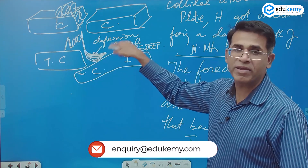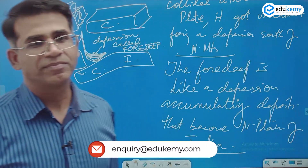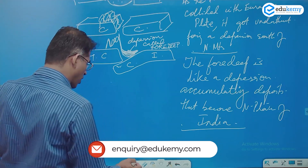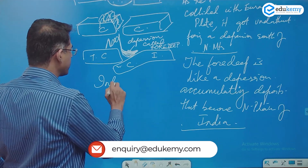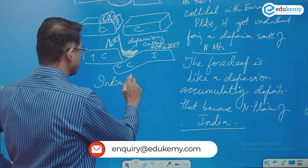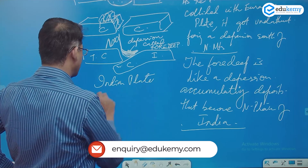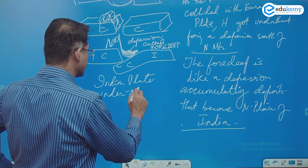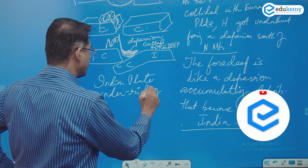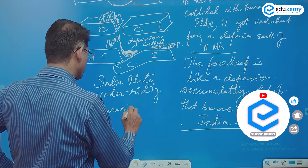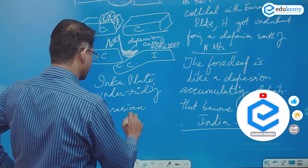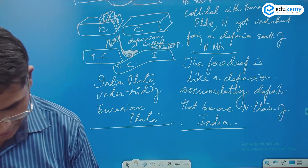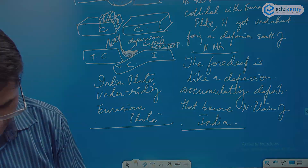This depression forms the Northern Plains. The Indian plate is under-riding the Eurasian plate — the Indian plate under-riding the Eurasian plate.